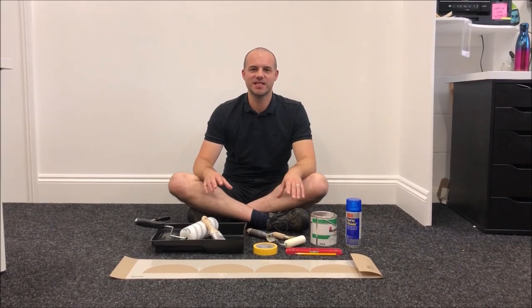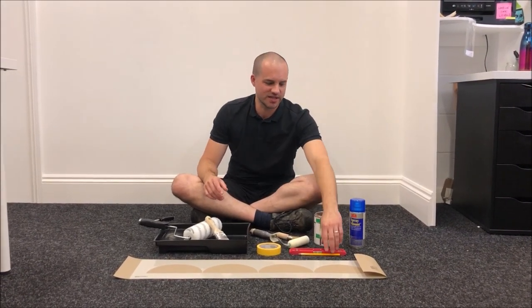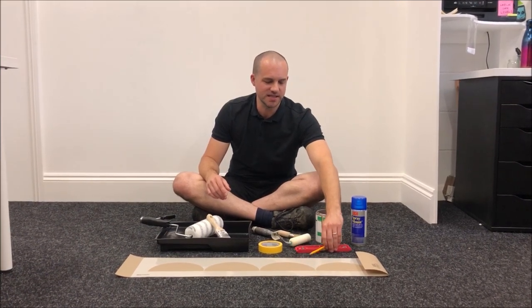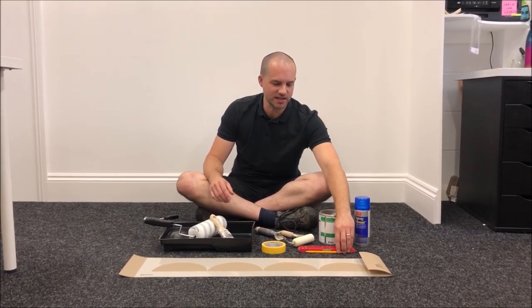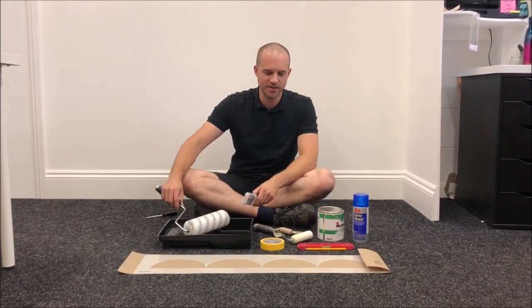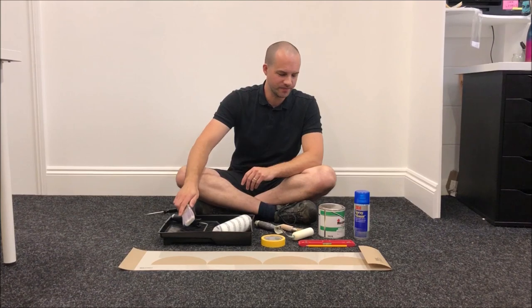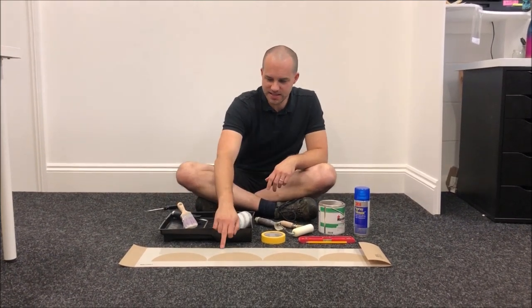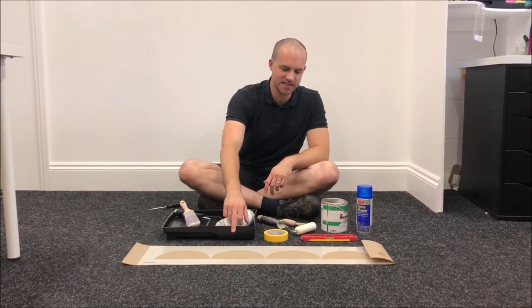These are some materials you'll need for your stenciling project. You'll need a spirit level and pencil for marking a horizontal line across the wall, a standard paintbrush and paint roller and tray for painting your wall, and the stencil—this is the 80-centimeter scallop stencil.